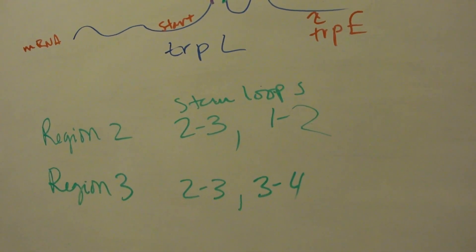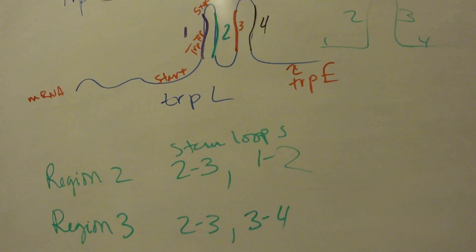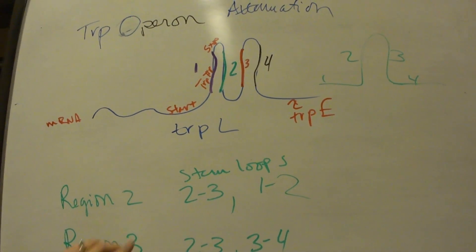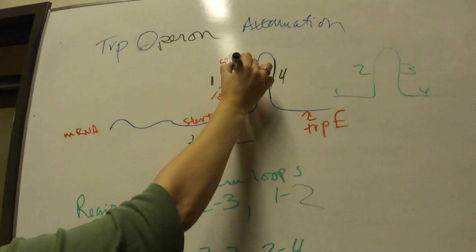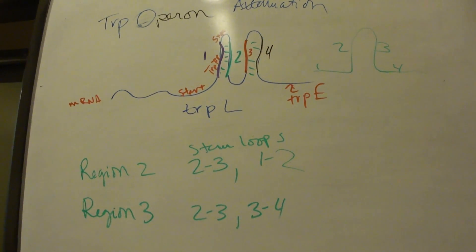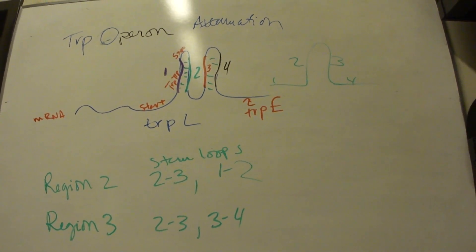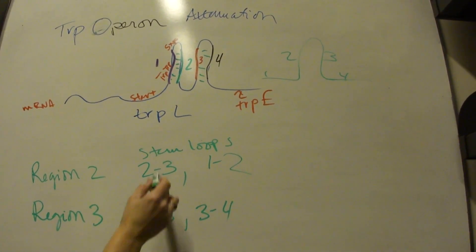Region 2 is complementary to region 3, but it's also complementary to region 4, so you can get stem loops 2-3 or 3-4. Remember, any region can only be forming a stem loop with one other region, it can't be used twice, because you're getting base pairing between these guys.